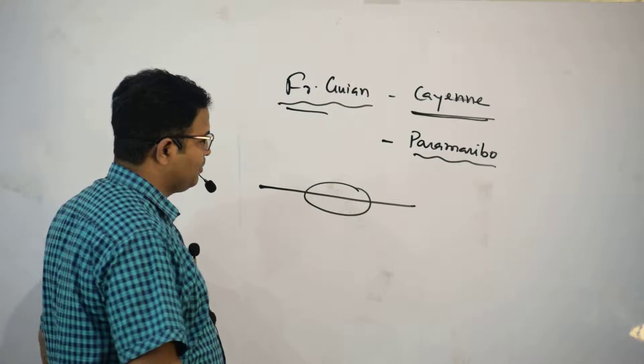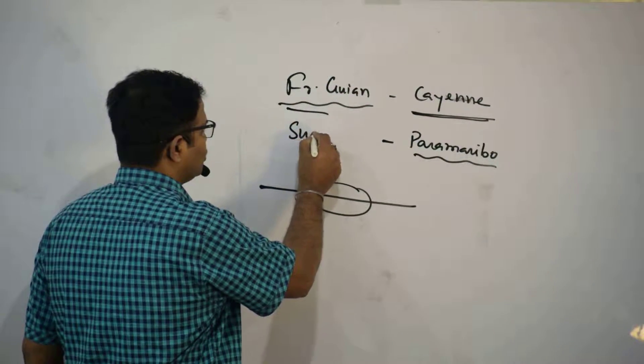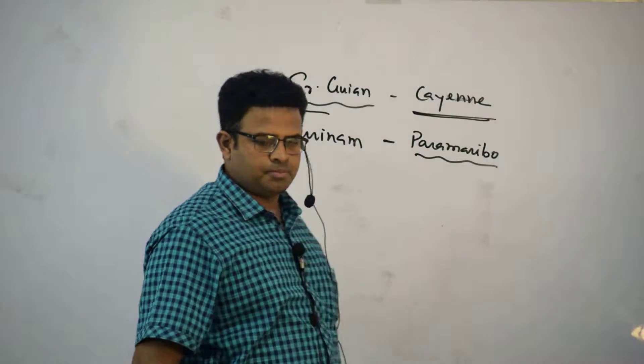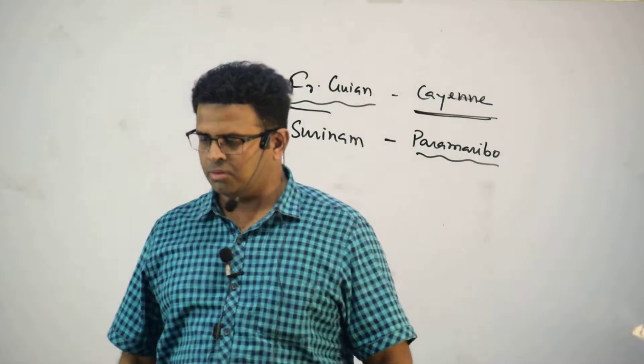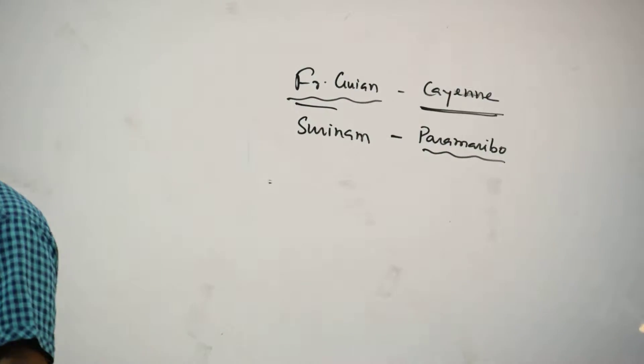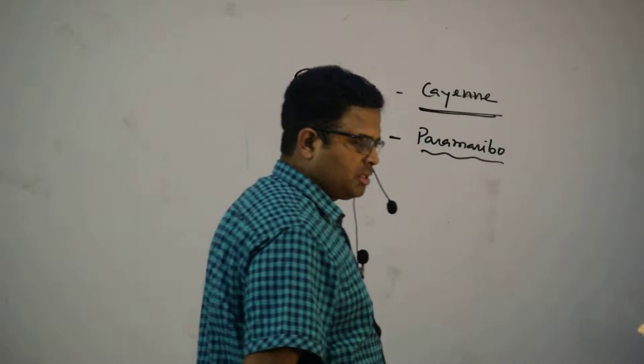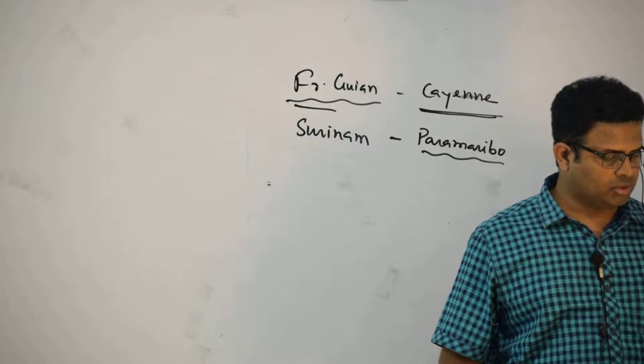So Suriname, Paramaribo. What is the capital of French Guiana? Cayenne. And Suriname capital is? Paramaribo. Understood?